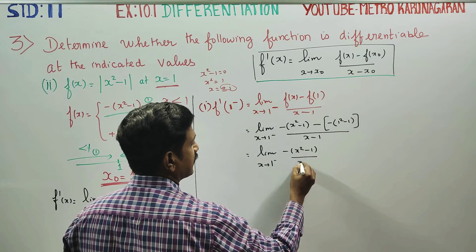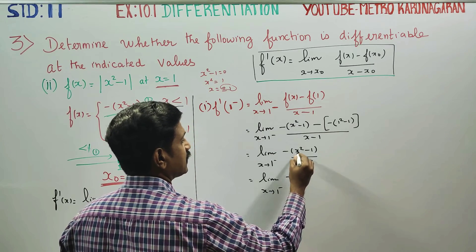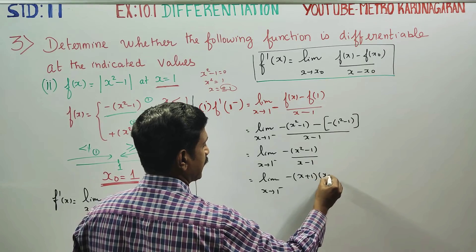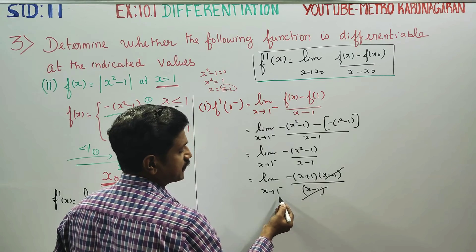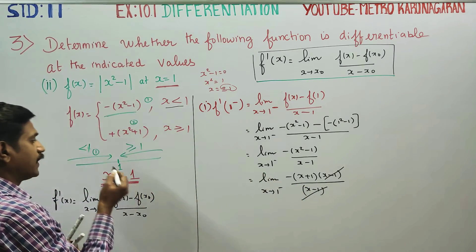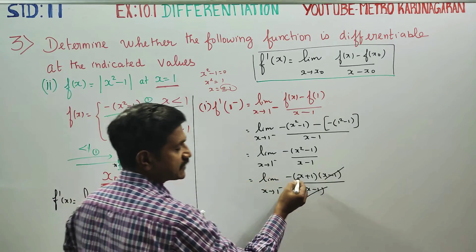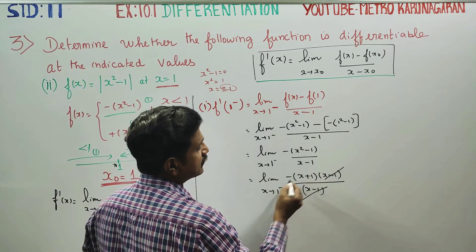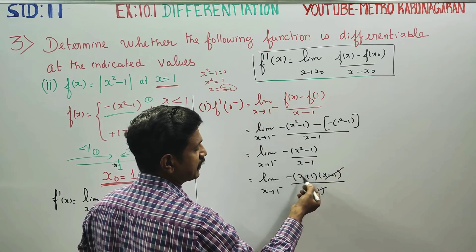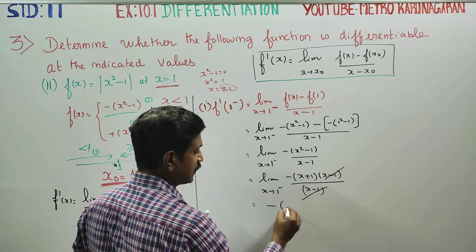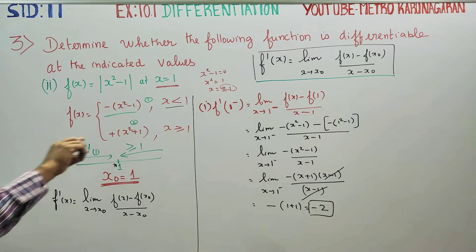Using the identity a squared minus b squared equals a plus b into a minus b, the limit as x tends to 1 minus becomes: minus of x squared minus 1 over x minus 1. After cancellation, substituting x approximately equal to 1, we get the left-hand side derivative equal to 2.